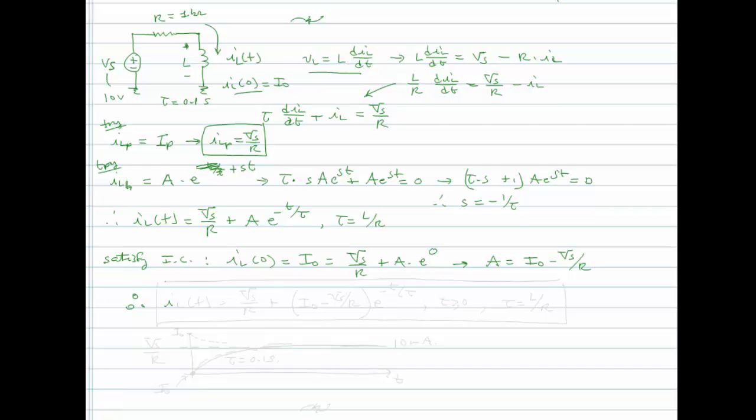So, finally, we can write the complete solution IL of T is equal to VS over R plus the quantity IO minus VS over R times E to the minus T over tau. And this is valid for T greater than or equal to zero, and tau is equal to L over R.